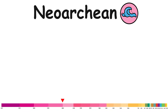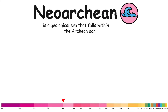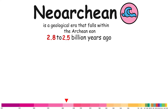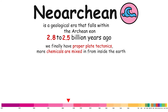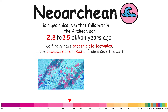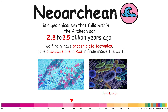Neoarchian. The Neoarchian is a geological era within the Archean eon, spanning approximately 2.8 to 2.5 billion years ago. During this period, because we finally had proper plate tectonics, more chemicals were mixed in from inside the Earth, and prokaryotes like bacteria began colonizing the planet.